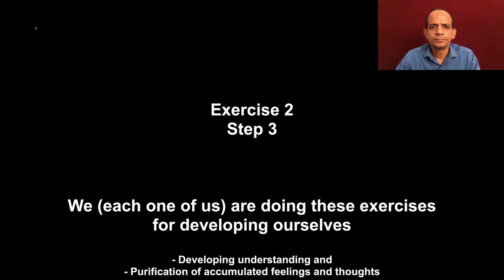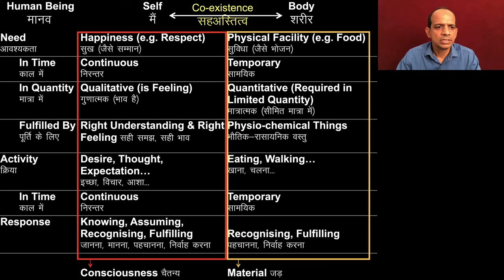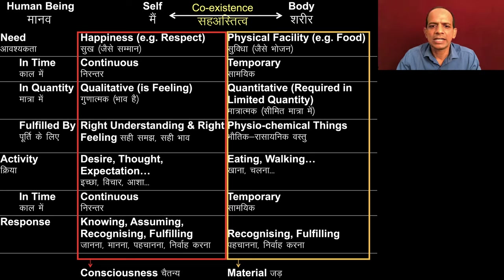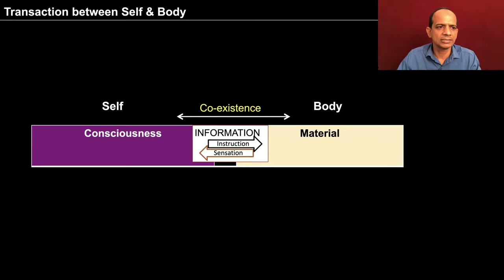We have studied about the self and the body and could see that the needs of the self are different from the needs of the body, the activities are different, and the responses are different. The self is a conscious entity and the body is a material entity. What we are trying to do in exercise 2 is observe these realities through direct observation. It becomes part of my understanding only when I am able to directly observe it.